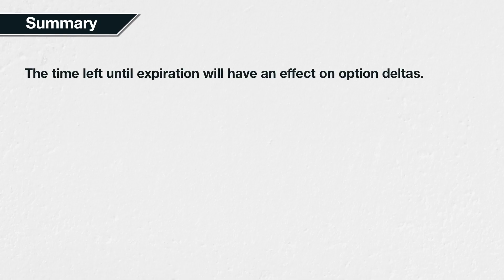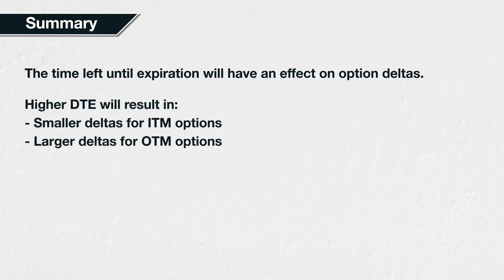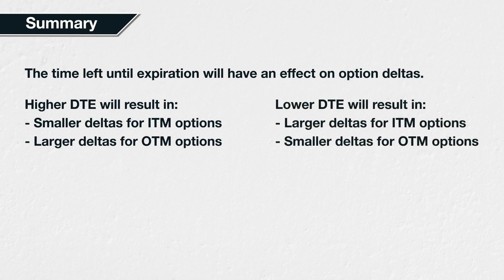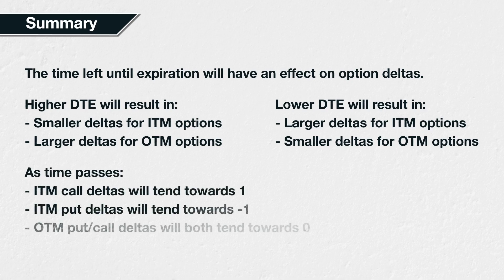In summary, the more time left until an option expires, the more time is left for the underlying price to move. Higher days to expiry will result in smaller deltas for in-the-money options and larger deltas for out-of-the-money options. Lower days to expiry will result in larger deltas for in-the-money options and smaller deltas for out-of-the-money options. The delta for in-the-money call options will tend towards 1, for in-the-money put options towards minus 1, and for both out-of-the-money puts and calls towards 0, though from opposite sides.